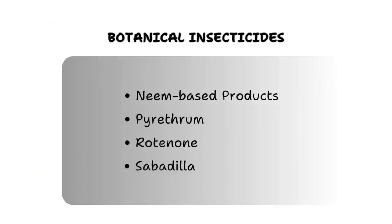The next control measure is the use of biopesticides. We have a variety of biopesticides: neem-based products, pyrethrum, rotenone and sabadilla. In a previous video we discussed neem-based products at length. In this video we will be discussing pyrethrum-based products. If you haven't watched the previous video, I suggest going back to understand neem-based products before coming back to learn more about pyrethrum-based products.